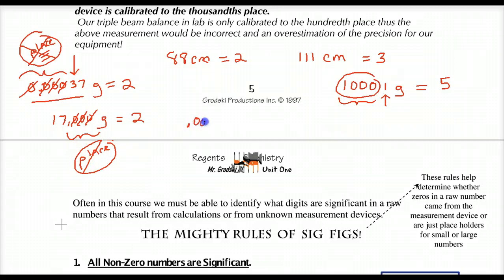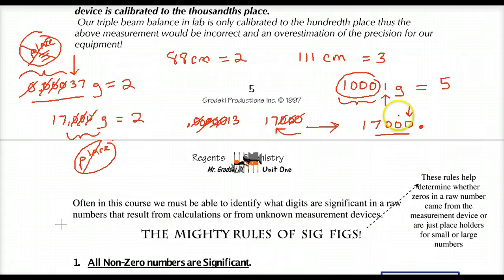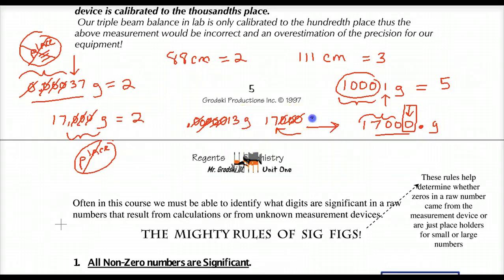How do you know you have a placeholder? A very small or very large number. If you need zeros to get to a small number, none of those leading zeros can be significant. Ending zeros can't be significant if they just help you get to a big number. The only exception is when we have a decimal. If I have 17,000 with a decimal point there, that's telling me this zero was measured — it was my guess off the measurement device. All those numbers are then significant because they were, in fact, measured.